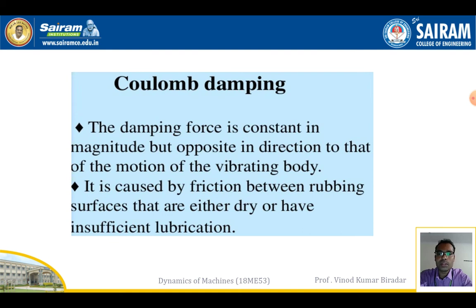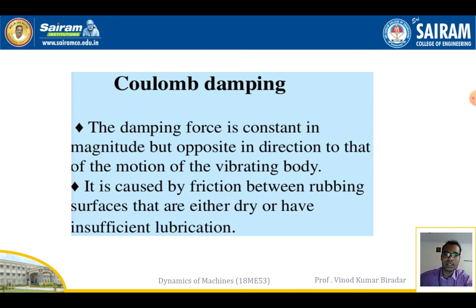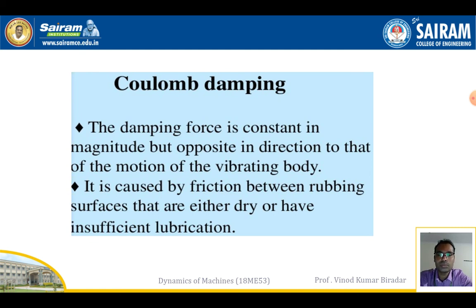Coulomb damping is where the damping force is constant in magnitude but opposite in direction to the motion of the vibrating body. It is caused by friction between rubbing surfaces that are either dry or have insufficient lubrication. The friction force is always opposite to the direction of the velocity of the mass. Such vibrations are called Coulomb damping.